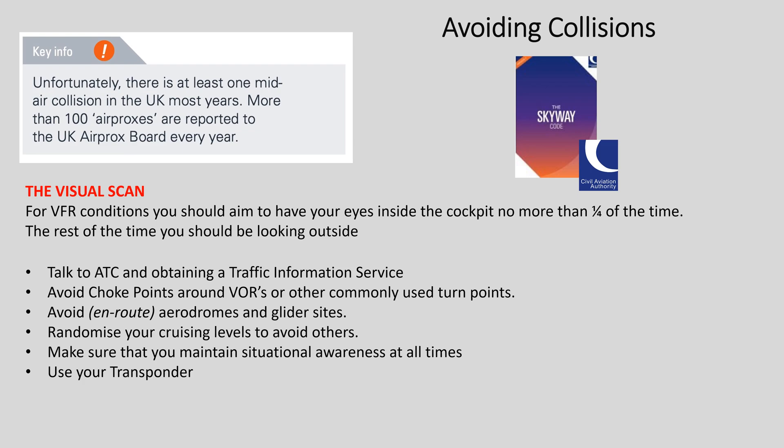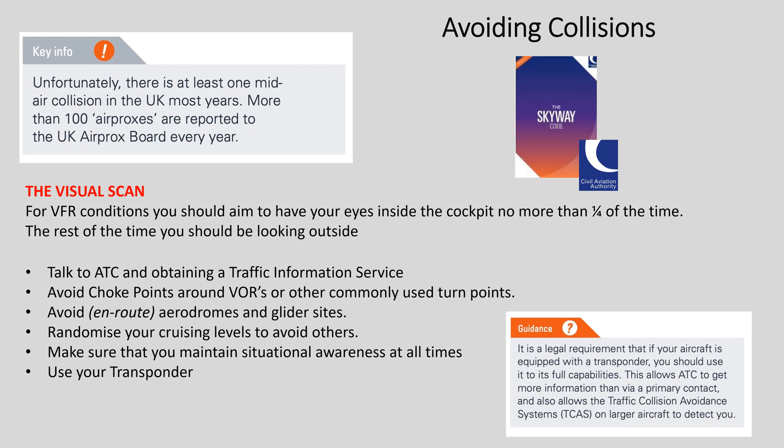Other techniques to maintain good situational awareness include maintaining contact with air traffic control, avoiding airspace choke points caused by adjoining controlled airspace, avoiding en route airfields and glider launching sites, and using non-standard cruising altitudes to avoid other aircraft. Importantly, make full use of your Mode S or Mode C transponder. They also point out that it is the law that if you have a working transponder you must use it, and of course they recommend the use of an electronic conspicuity device.